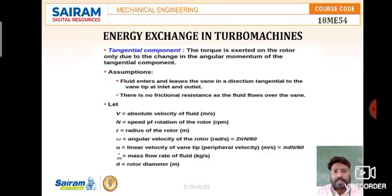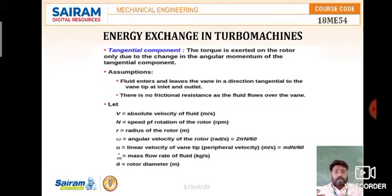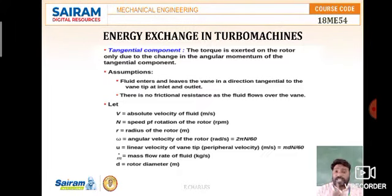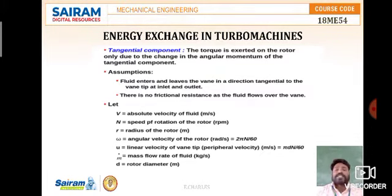Next, capital N is equal to the speed of rotation of the rotor. There will be a shaft and a rotor on top of it. When the turbine blades and impeller rotate, the shaft rotates and the entire rotor rotates. Capital N is the speed of rotation of the rotor, which is in RPM — revolutions per minute.